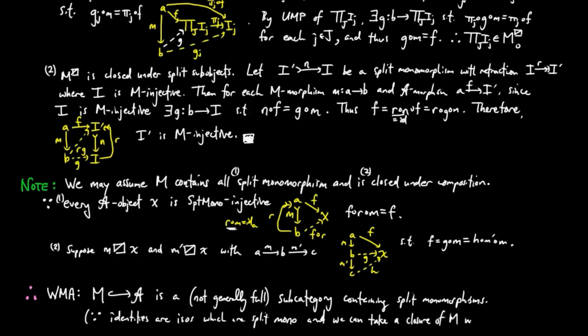By dualizing everything above, we obtain the notion of a projectivity subcategory, and we leave it to you to dualize the above results.